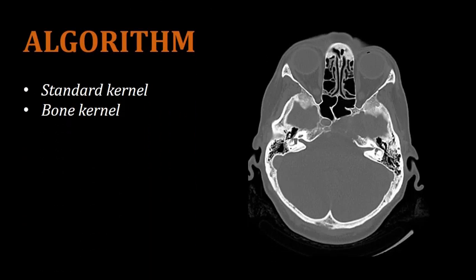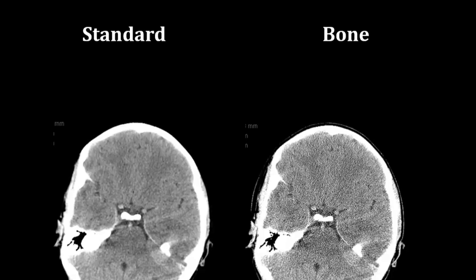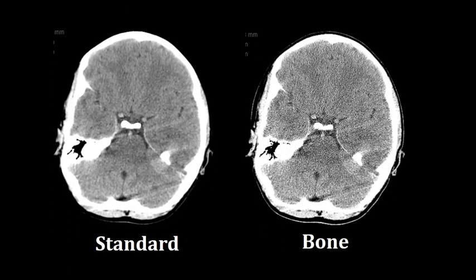A CT head should be performed with both the standard algorithm and the bone algorithm. In these two images of the bony areas at the base of the cranium — same slice, same thickness — the image at the left was completed with the standard algorithm and the image at the right with the bone algorithm. The standard algorithm does not represent bony structures very well, as it is a smoothing filter. The bone algorithm gives us very crisp, high spatial resolution images of the bone. It is still valuable to perform a standard algorithm reconstruction.